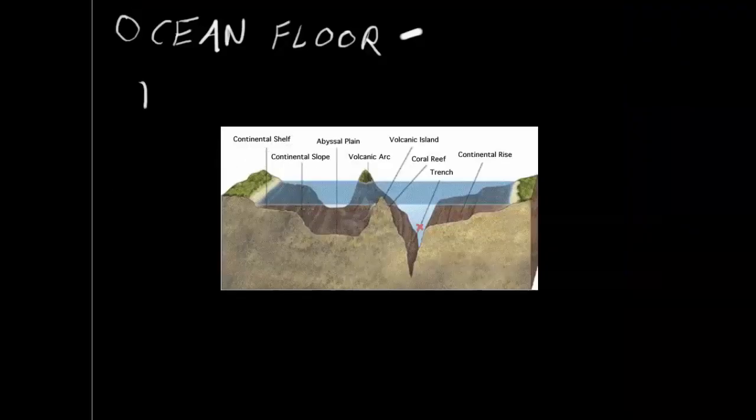Again the shelf, the slope slopes right down. The abyssal plain very featureless. And then we have the continental rise a little more gently sloping here.